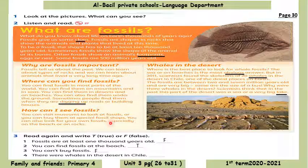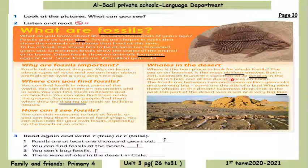Number 4: There were whales in the desert in Chile. Is it true or false? Yes — true! Scientists found the skeletons of 20 whales in the desert in Chile.